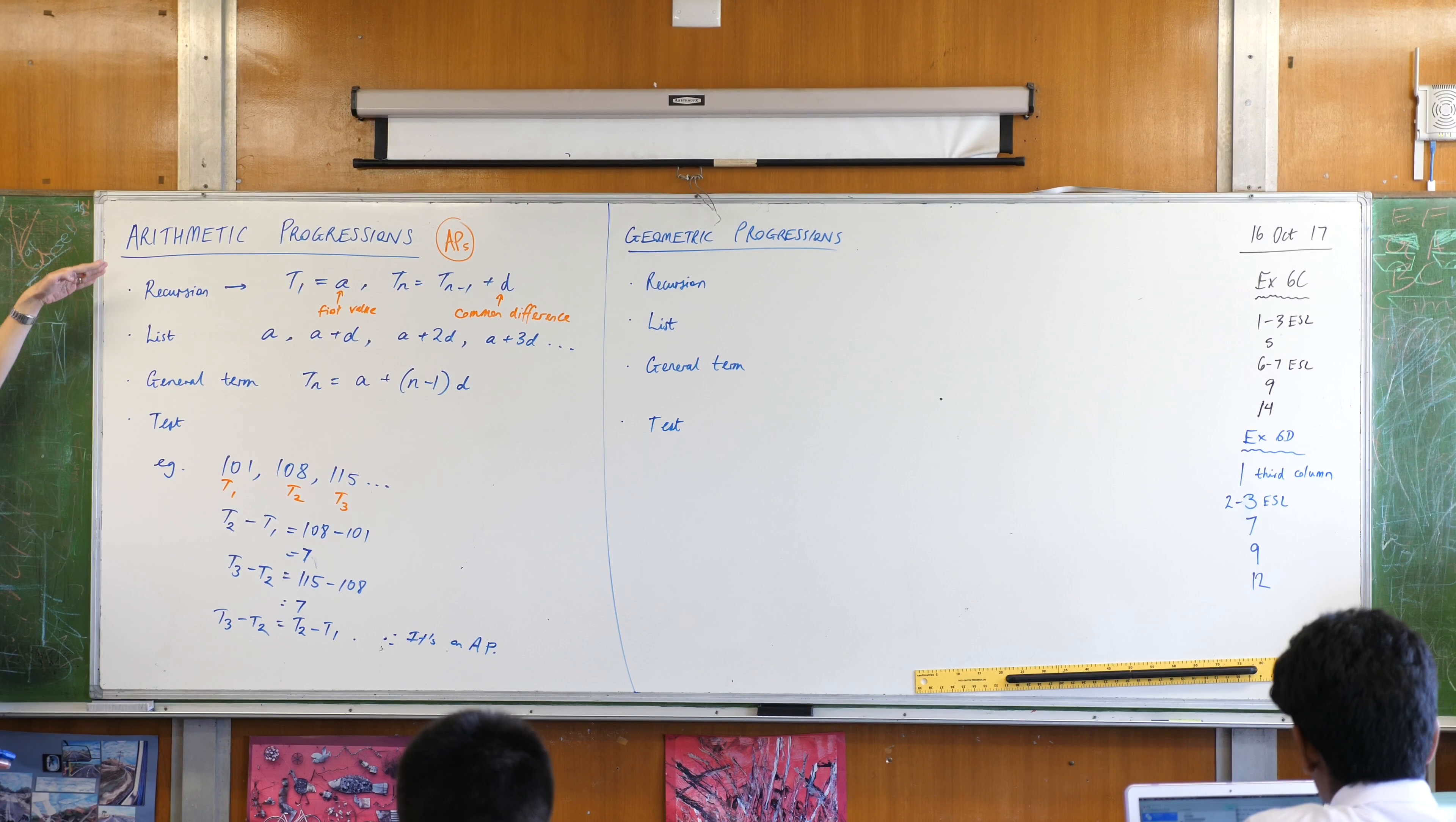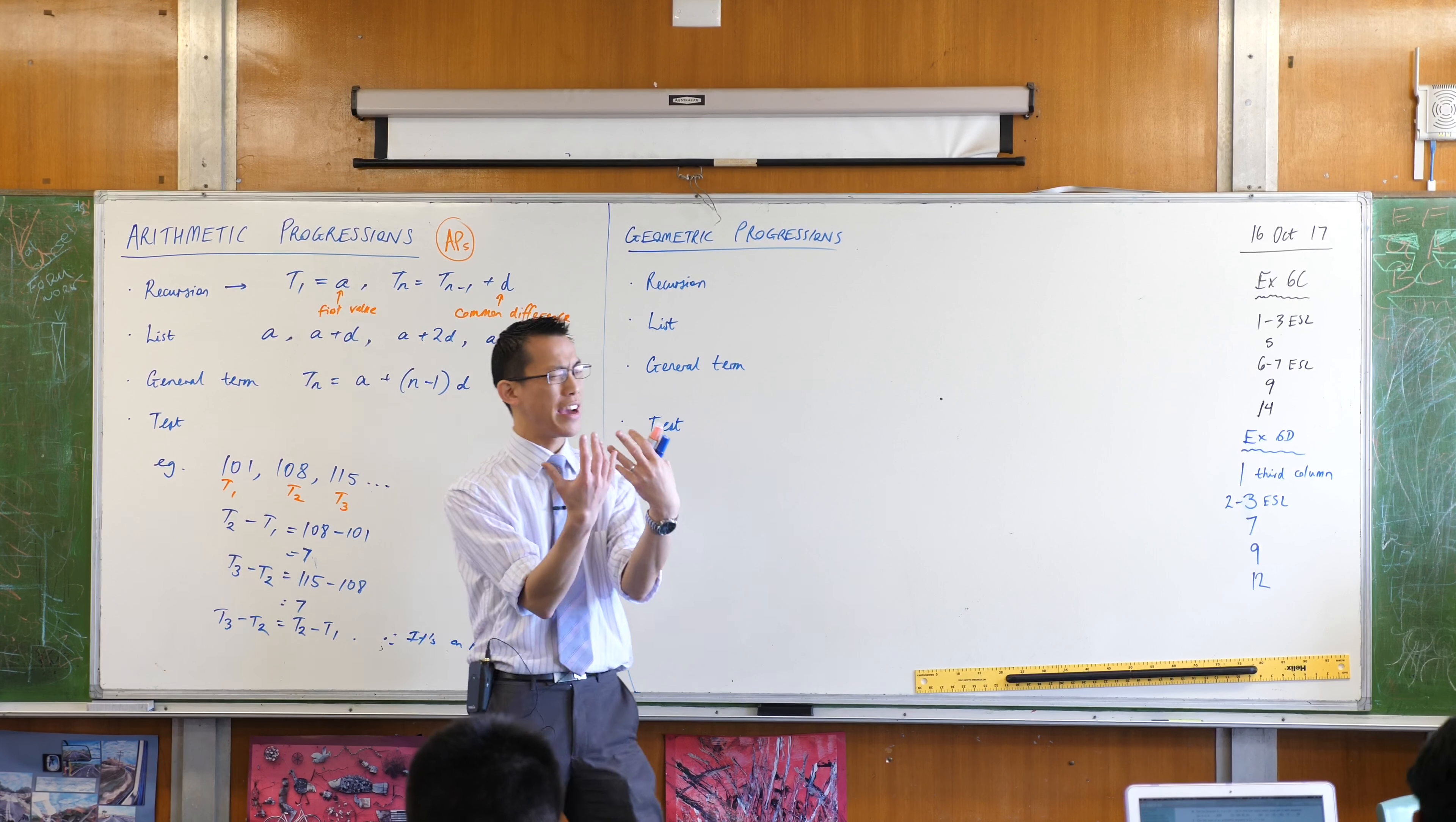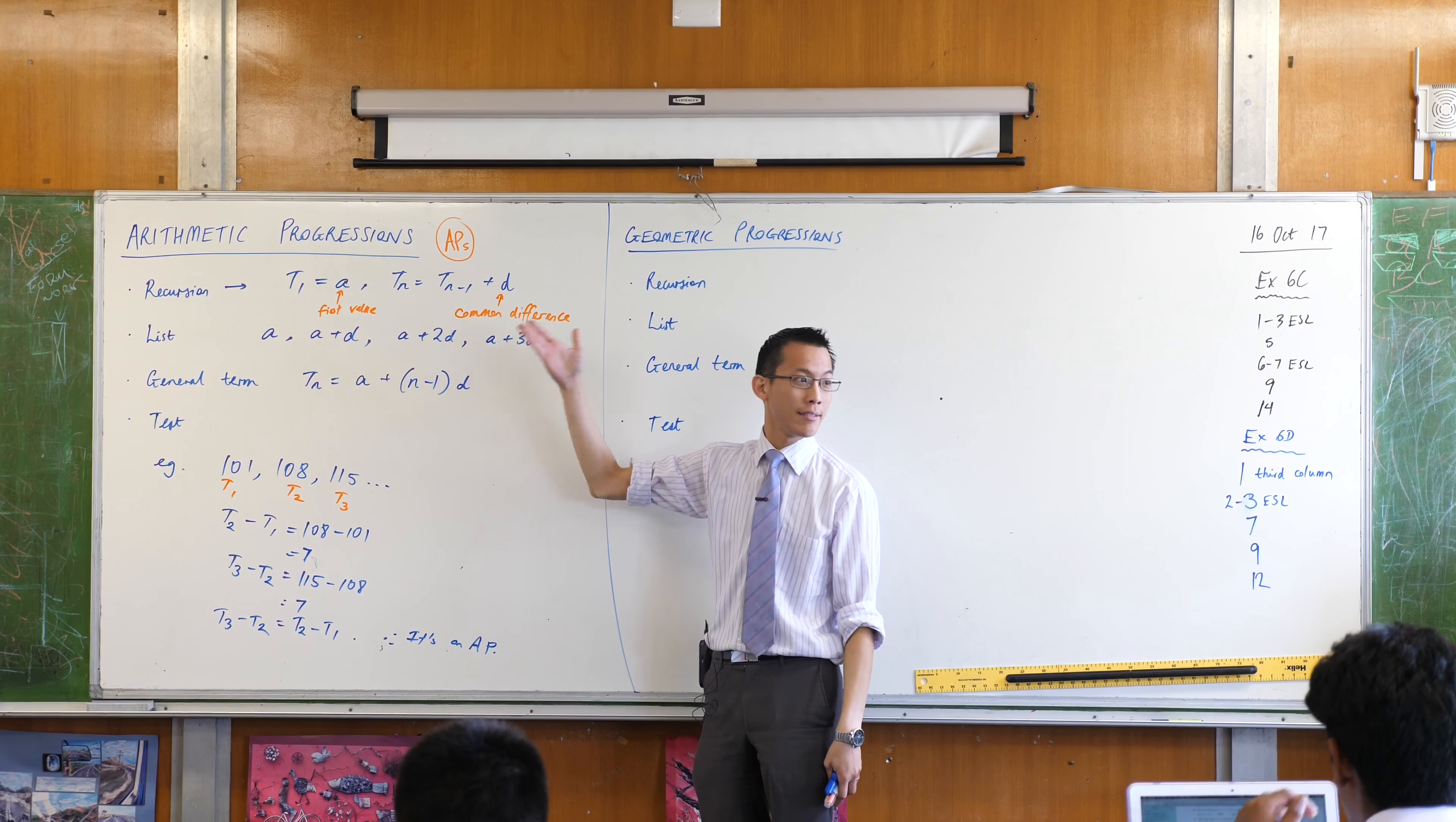So we defined them with all three ways that we knew before and using those three ways we developed a test. If you've got a given progression you can find out whether it is an AP just by searching for that common difference because that's what makes an AP an AP.